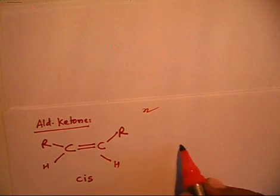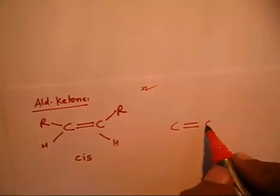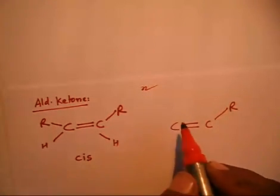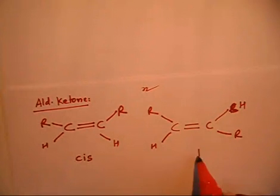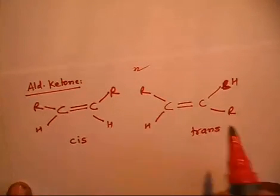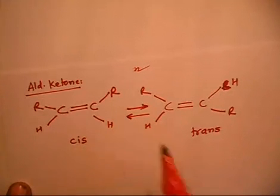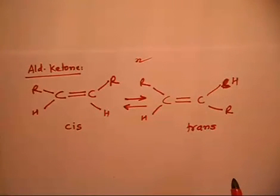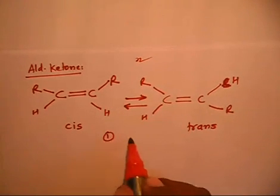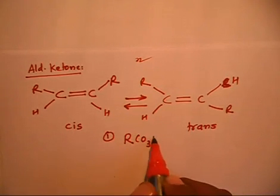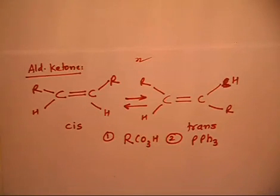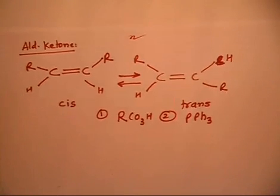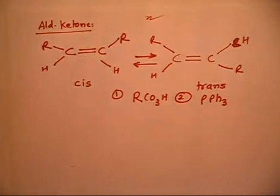Here is the cis-alkene and here is the trans-alkene, with hydrogens placed accordingly. The key point is: trans-alkene can be converted into cis, and cis can be converted into trans. First you do epoxidation using RCO3H, and then you treat the compound with PPh3. This converts the cis-alkene into a trans-alkene.